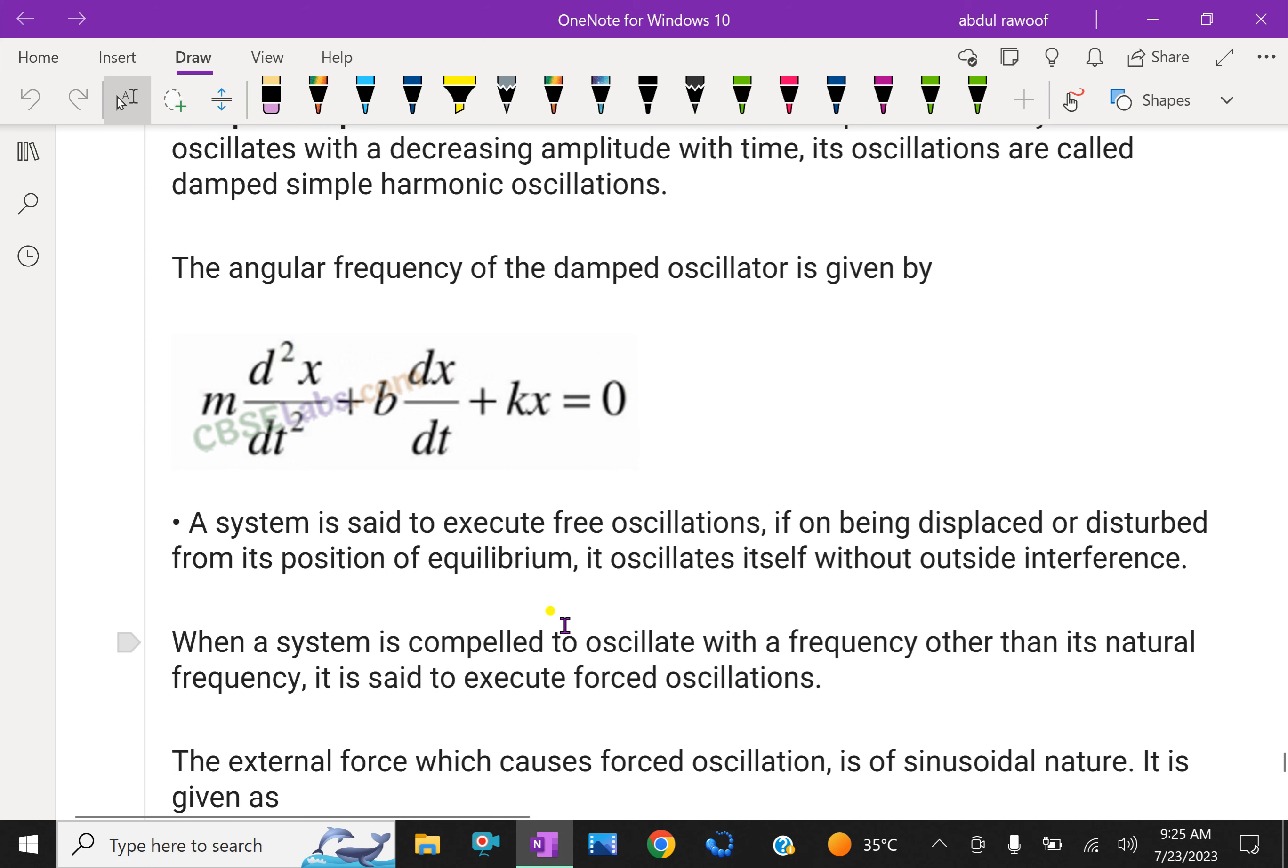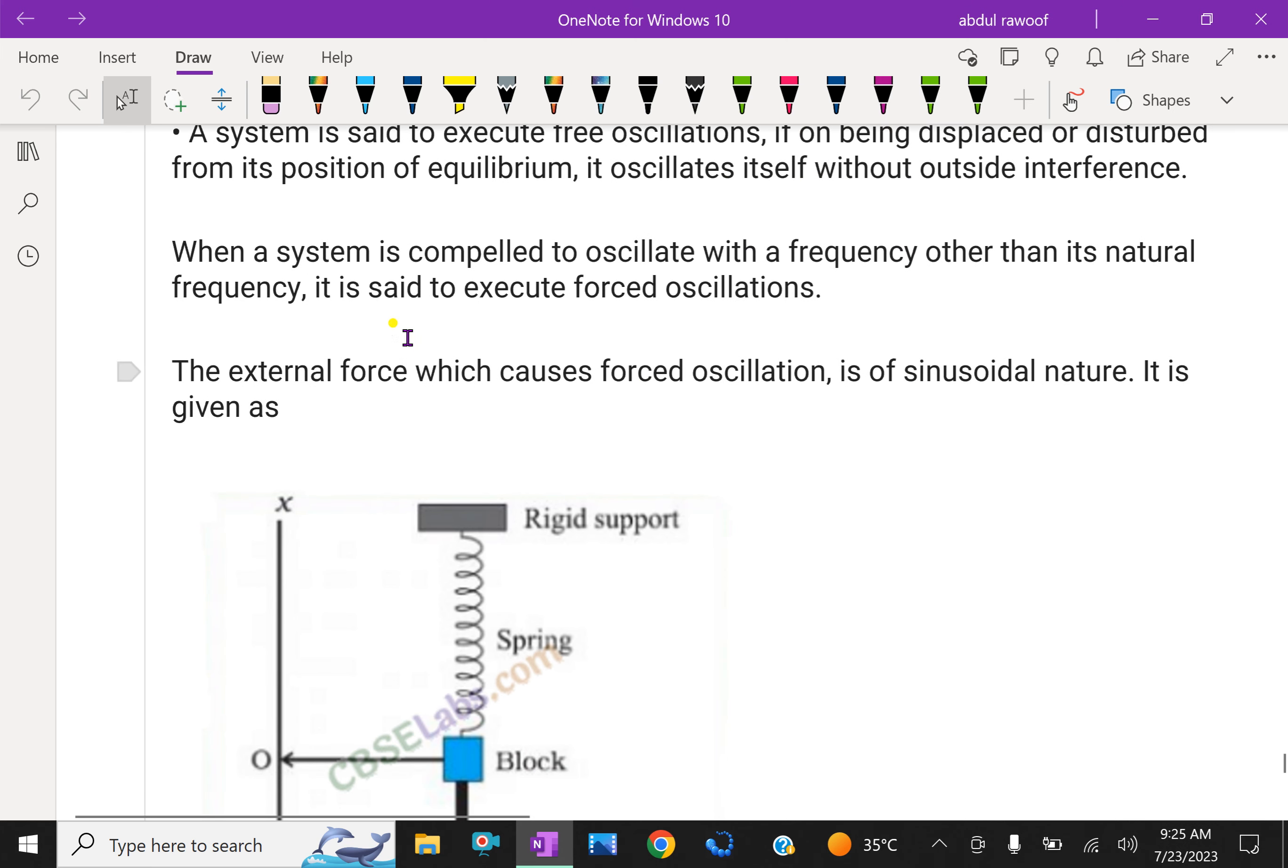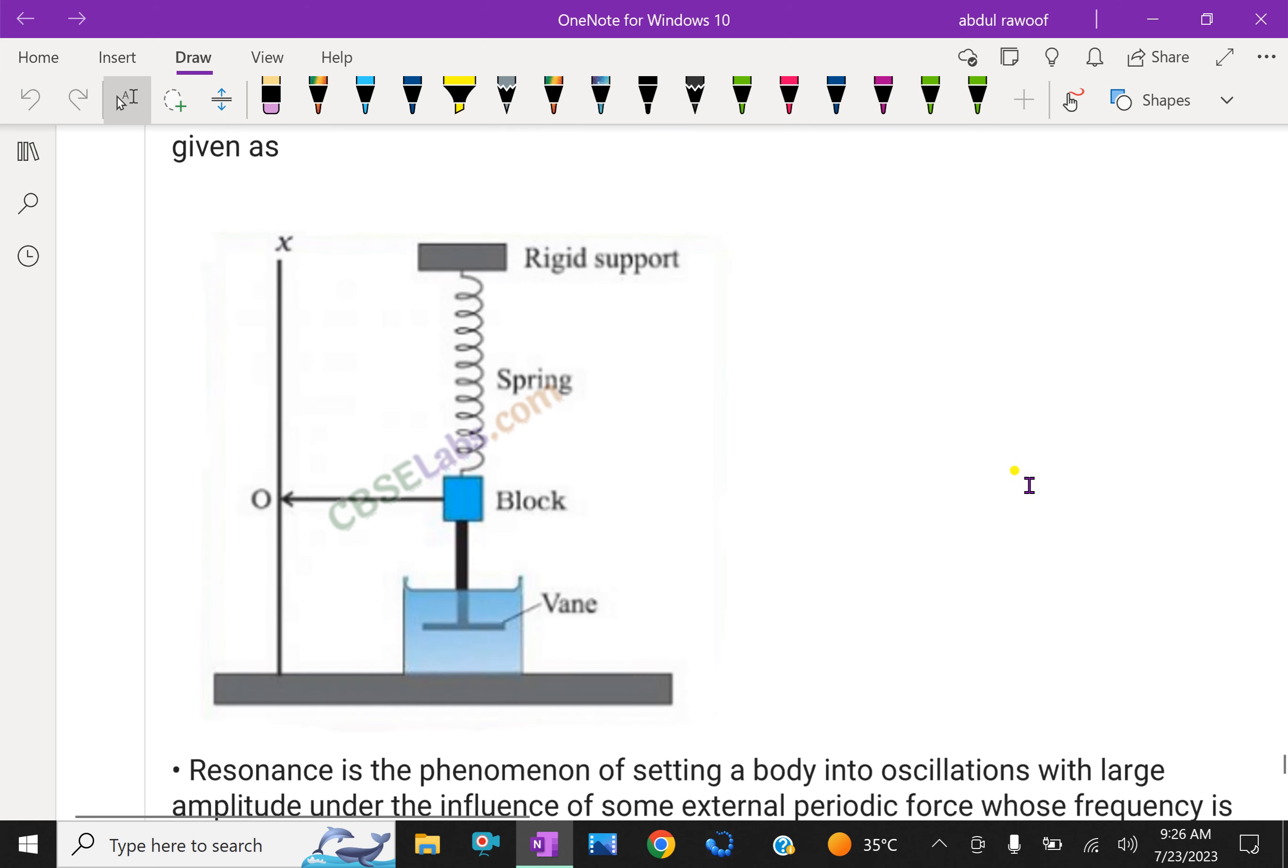A system is said to execute free oscillation if, on being displaced or disturbed from its position of equilibrium, it oscillates itself without outside interference. When a system is compelled to oscillate with a frequency other than the natural frequency, it is said to be forced oscillation. Suppose we are giving external force to this block—it is called forced oscillation.